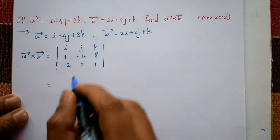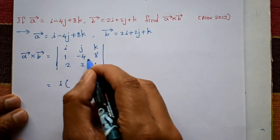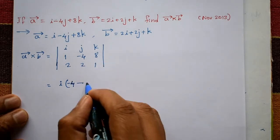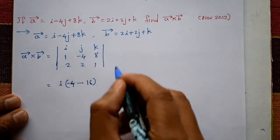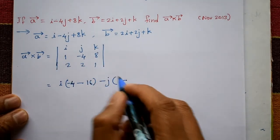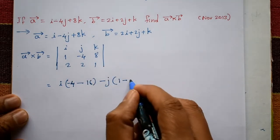Now expand this determinant. i into minus 4 into 1 is minus 4, minus sign, and this is 16. Plus minus, plus. Then minus j, 1 into 1 is 1, minus sign, 2 into 8 is 16.